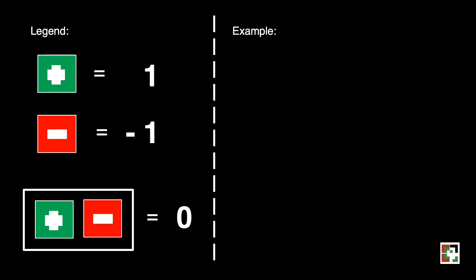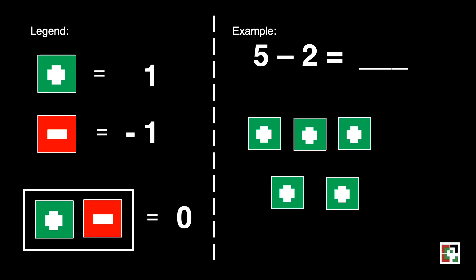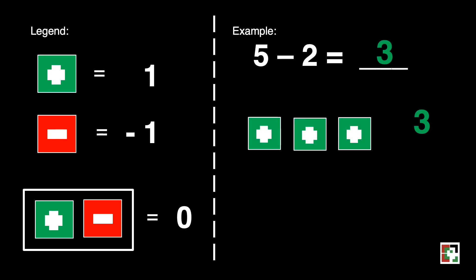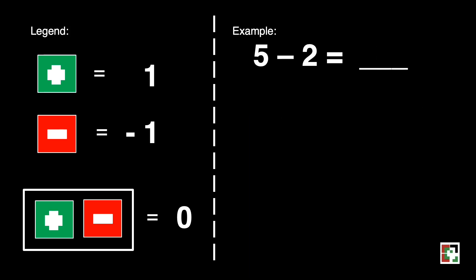Let's have this example. If we have 5 minus 2 is equal to blank, 5 here is represented by 5 green squares, subtracted by 2 green squares. What is left is 3 green squares. I want to introduce the zero pair in subtracting integers.